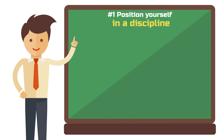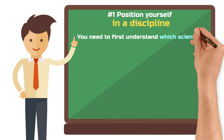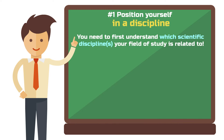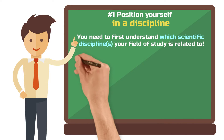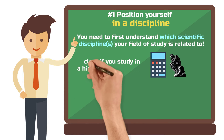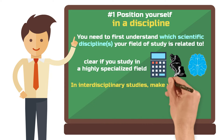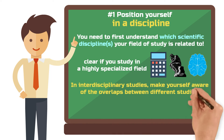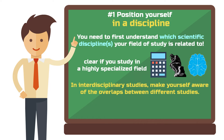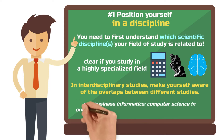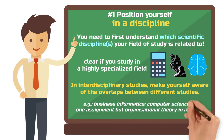No matter what you are studying, you should first understand which scientific discipline or disciplines your field of study is related to. If you're studying in a highly specialized field like mathematics, philosophy or psychology, the situation is quite clear. But if you're studying at an intersection, be aware of which disciplines are relevant to you. This may also change over the course of your studies from one project to another.